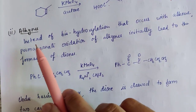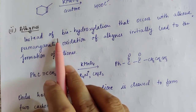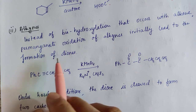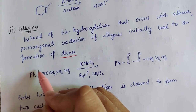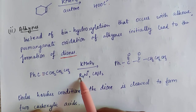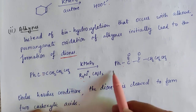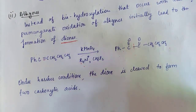If we talk about alkynes — in case of alkynes, bis-hydroxy functional groups are not formed. Instead, diones are formed. When you have a triple bond, you get two carbonyl carbons in the presence of base. If this reaction is carried out under harsh conditions — heated or concentrated KMnO4 — this bond again cleaves and you get two carboxylic acids.